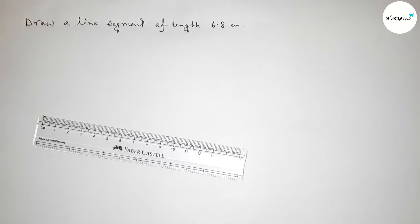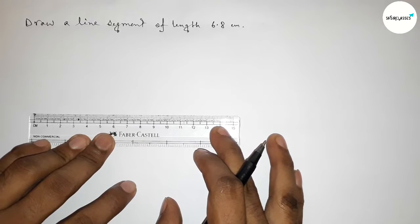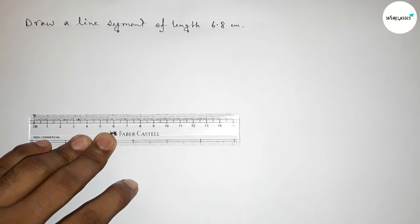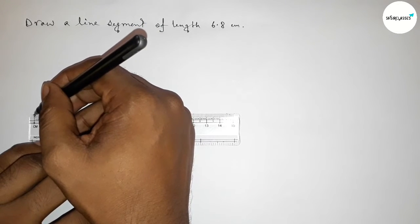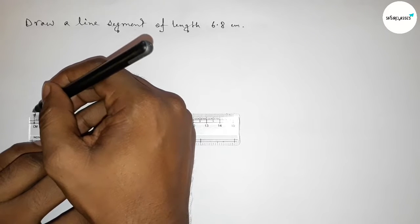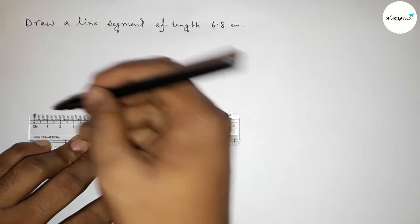First of all, with the help of the scale, we have to put the scale here perfectly. Then we have to measure the length 6.8 centimeters. So first, marking here the starting zero. This is the starting zero.